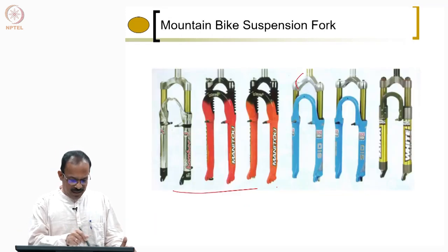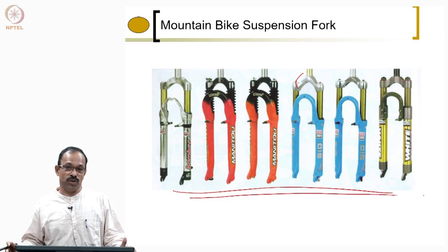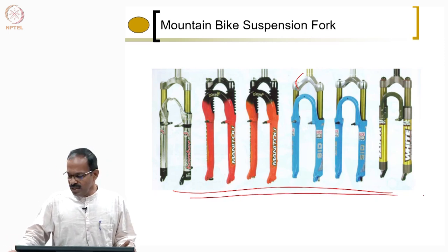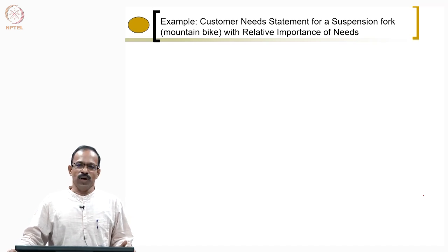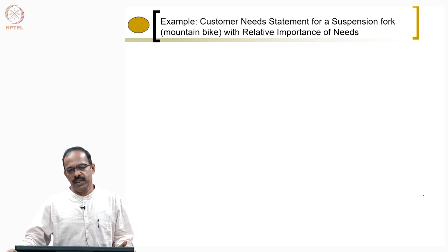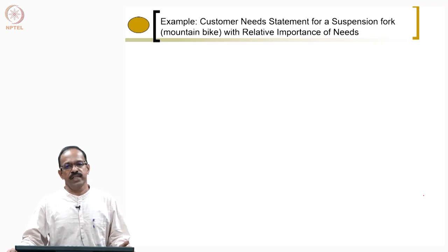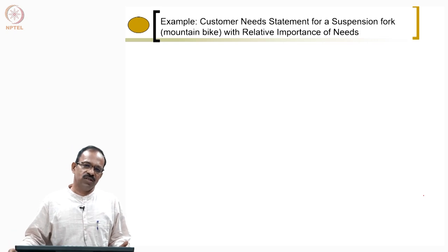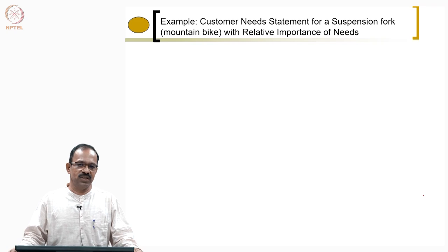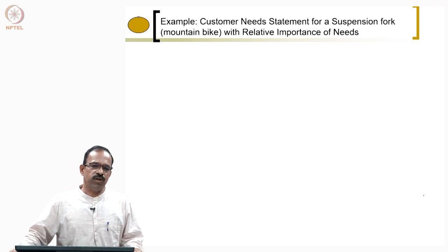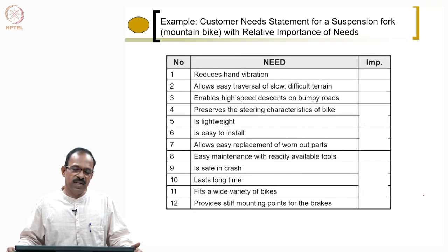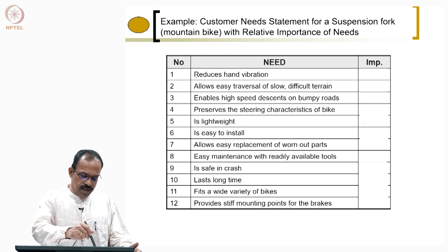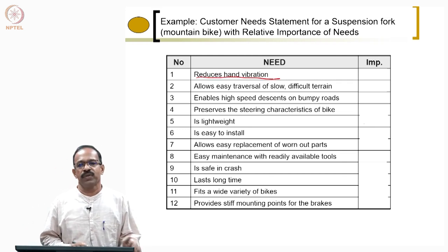You can see these are some of the different types of suspension fork available in the market, and this company wants a new design. If you go through all these analyses — using like/dislike methods, interpreting the identified needs, and classifying them using an affinity diagram — one of the most important aspects of a suspension is that it should reduce vibration. Someone holding the handle and riding the cycle should not get a lot of vibration on his hand — that is one of the basic requirements.